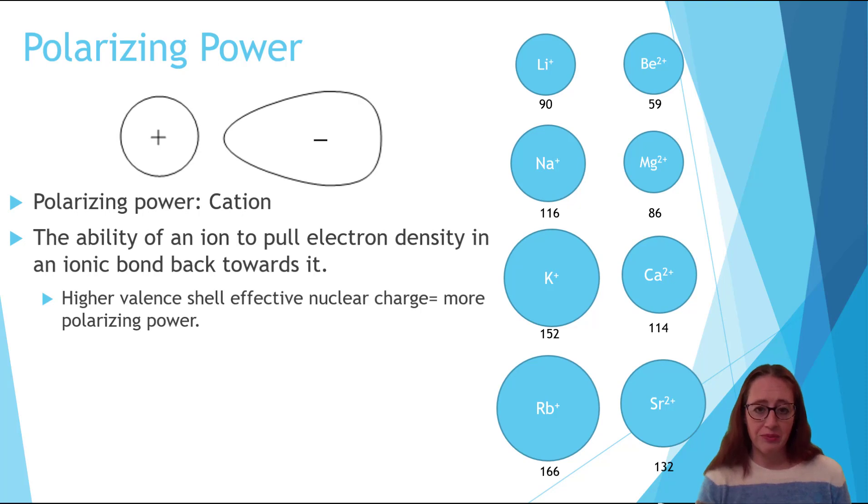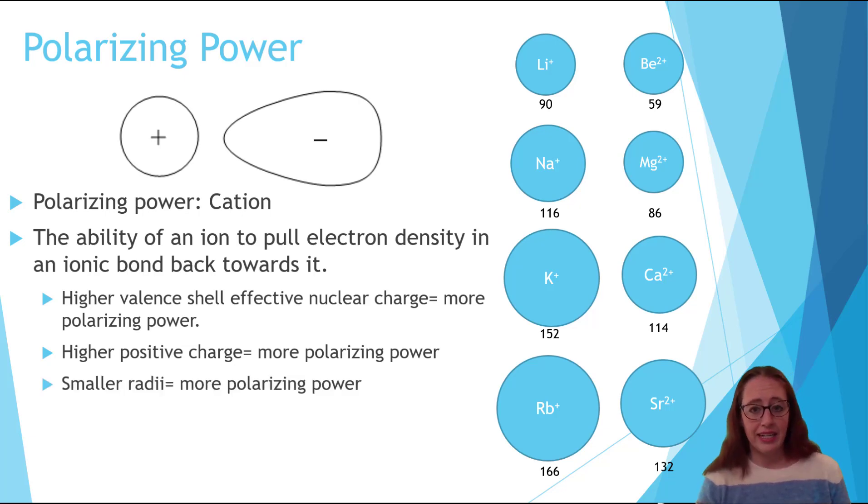Firstly, its charge. The greater its positive charge, the greater its valence effective nuclear charge, and the greater its polarizing power. Secondly, size. The smaller the ion is, the greater its valence effective nuclear charge is, and the greater its polarizing power is.